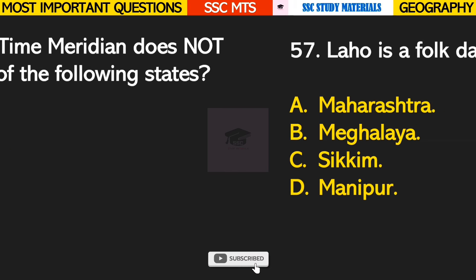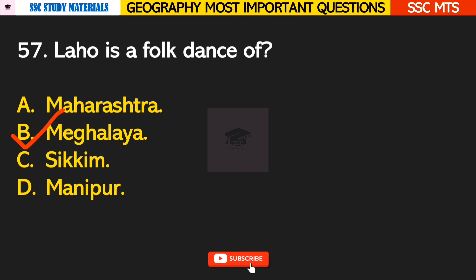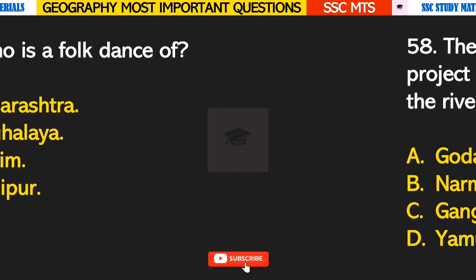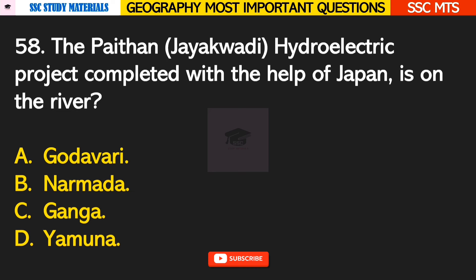Question number 57: Lahore is a folk dance of? Answer B — it is the folk dance of Meghalaya. Question number 58: the Polavaram hydroelectric project completed with the help of Japan is on the river? Answer A — it is on the river Godavari.